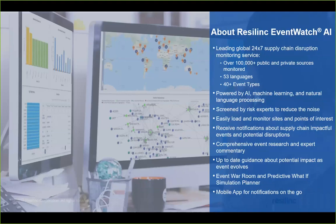Before we jump into the report findings, it's probably good to briefly cover the Event Watch service itself, since some people attending may not be familiar with it. Basically it's a global supply chain event monitoring service that runs 24/7, monitoring over 100,000 public and private sources across many languages and different event types — whether it's man-made or natural disasters, compliance, change of ownership, M&A activity. We use a combination of artificial intelligence, machine learning, and data aggregation, then screening by risk experts to reduce noise and give our clients very precise events.